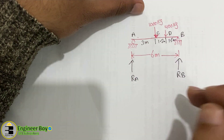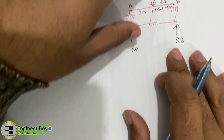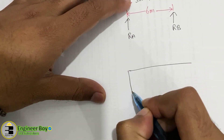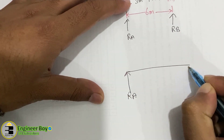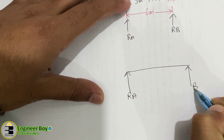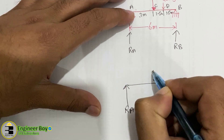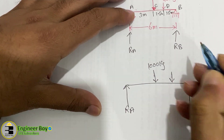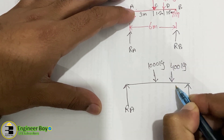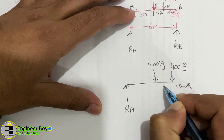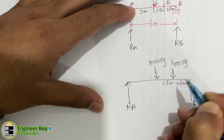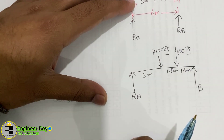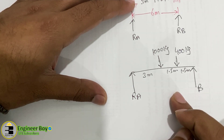We can draw the free body diagram: reaction A on the left, reaction B on the right. At the midpoint we have 1000 kg, and at some distance we have 400 kg. The distances are 1.5 m, 1.5 m, and 3 m respectively. This is the free body diagram.